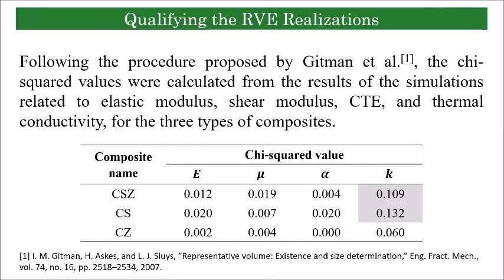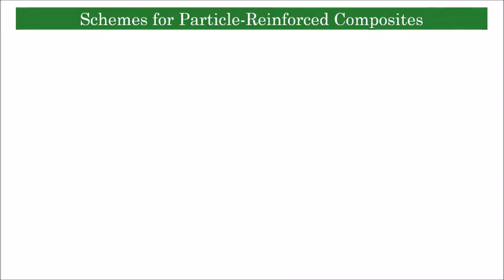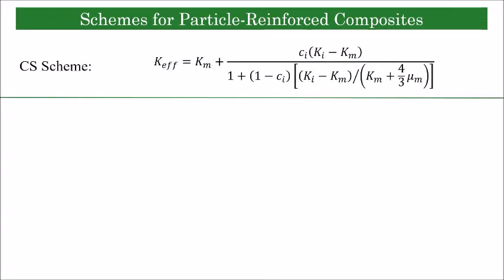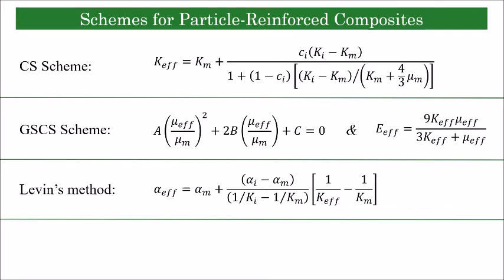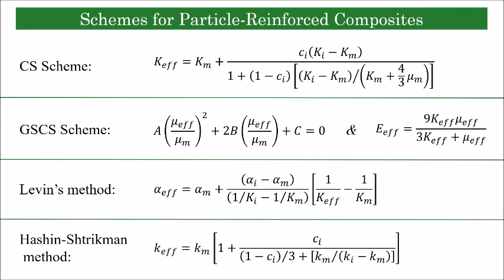Predictions made by the finite element simulations are compared to the predictions made by well-known schemes. The following are the schemes used for prediction of the effective properties of particle-reinforced composites. Composite sphere scheme used for calculating effective bulk modulus. Generalized self-consistent scheme used for calculating effective elastic modulus. This scheme comprises eight equations that need to be solved simultaneously, only two of which are shown here. Levin's method for calculating effective coefficient of thermal expansion. And finally, Hashin-Shtrikman method for calculating effective thermal conductivity.